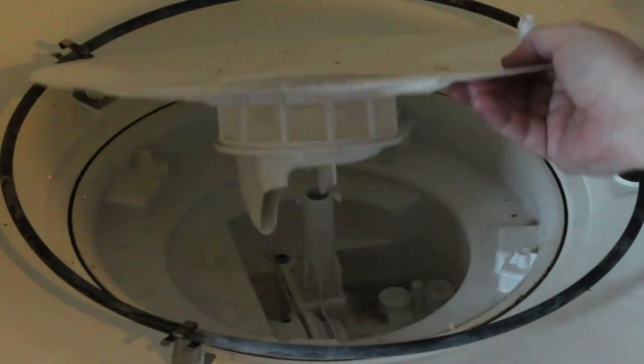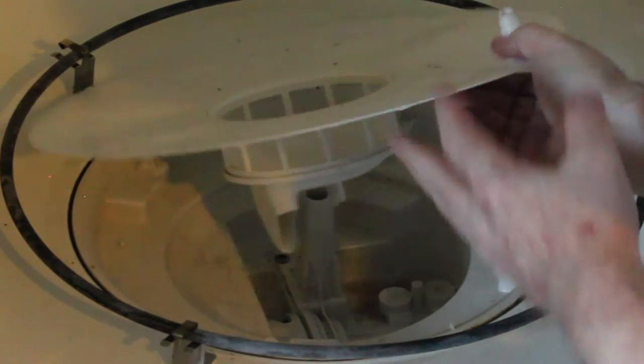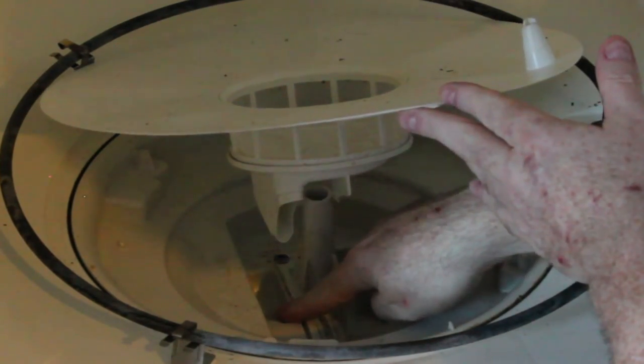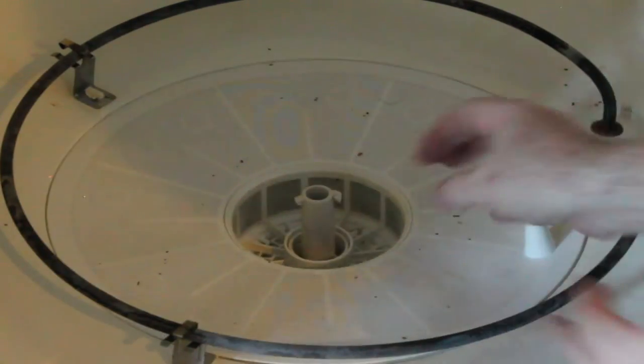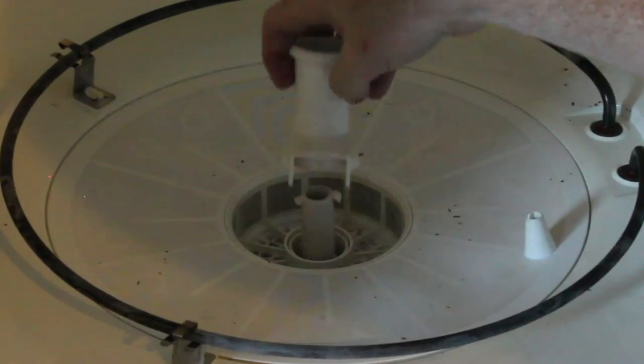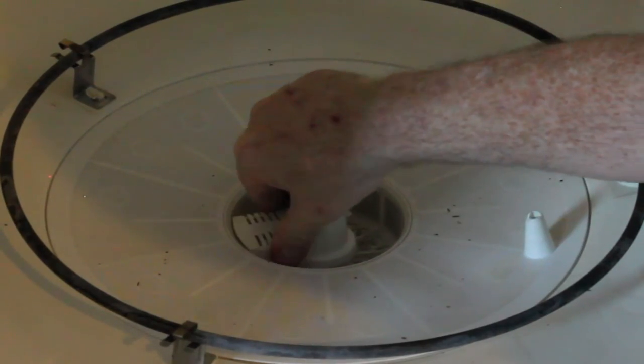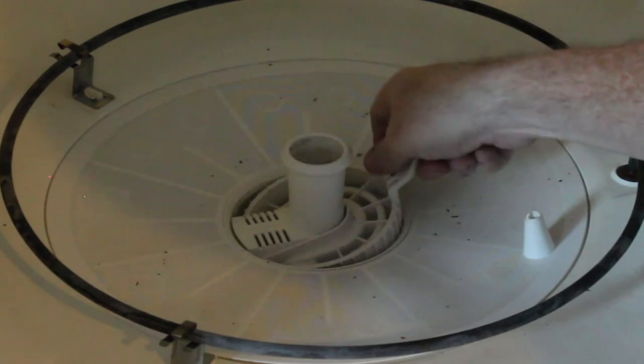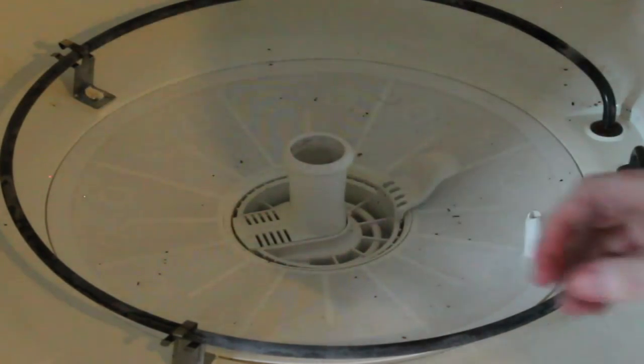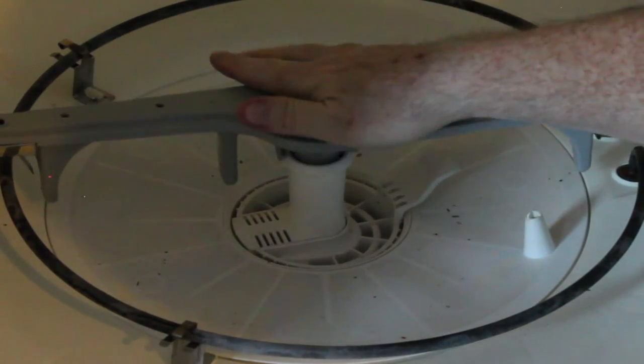Reinstall the main filter and take note of the fact that that drain spout going into the macerator of the pump can only go in in one position. Reinstall the lower spray arm support and put the coarse filter back in place. Put the lower washer arm back in position.